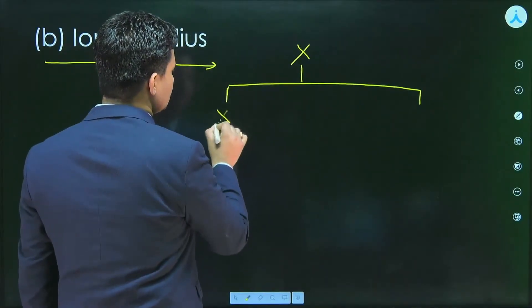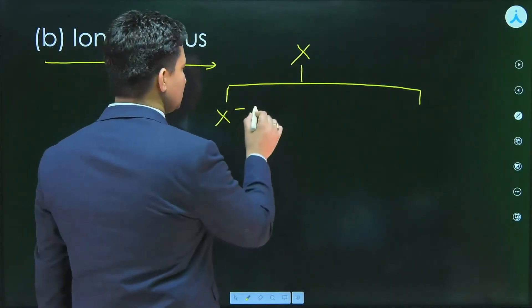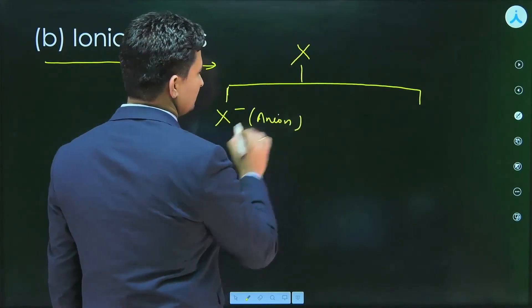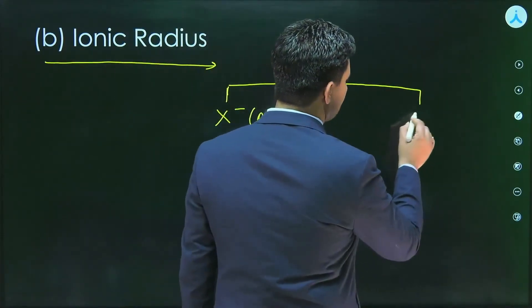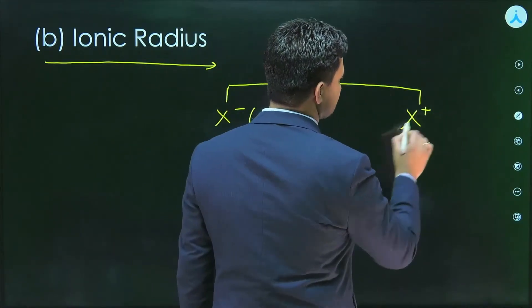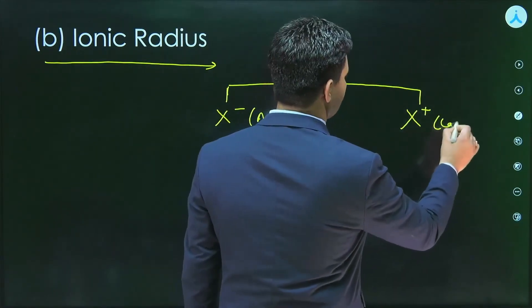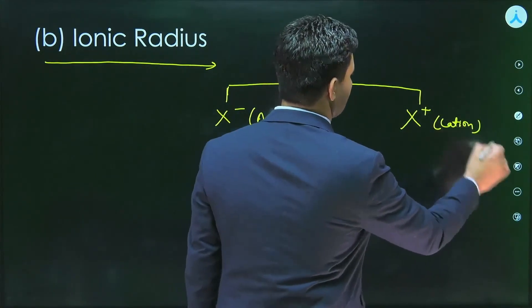Suppose it becomes X minus, that is an anion. And it becomes X plus, that is cation.